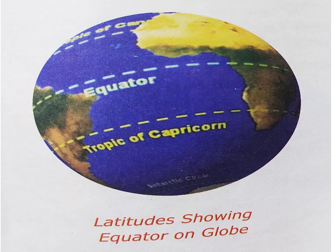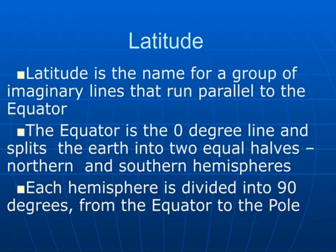Latitude is the name for a group of imaginary lines that run parallel to the equator. The equator is the zero degree line and splits the earth into two equal hemispheres — the northern and the southern. Each hemisphere is divided into 90 degrees from the equator to the pole.